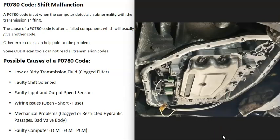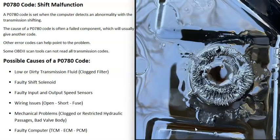Another possible cause is a mechanical problem inside the transmission, such as clogged or restricted passageways where the fluid can't flow correctly, or a bad valve body. If that's the case, you're very likely going to get other codes. If you suspect a mechanical problem and the vehicle has a dipstick, check the fluid for metal shavings. Also, if you have the fluid and filter changed, look at the bottom of the pan — there are magnets down there, and if there are a lot of metal shavings on them, there's likely a mechanical issue with the transmission or torque converter.